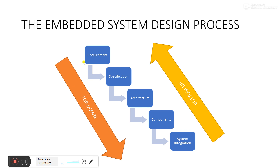This process is the top-down model — starting from requirements, then specification, then architecture, then components, and finally system integration. Sometimes we have a complete system and need to reverse-engineer it, in which case we use the bottom-up model: starting from system integration, identifying components, determining the architecture, then the specification, and finally what requirement it was built for. Both approaches are important.